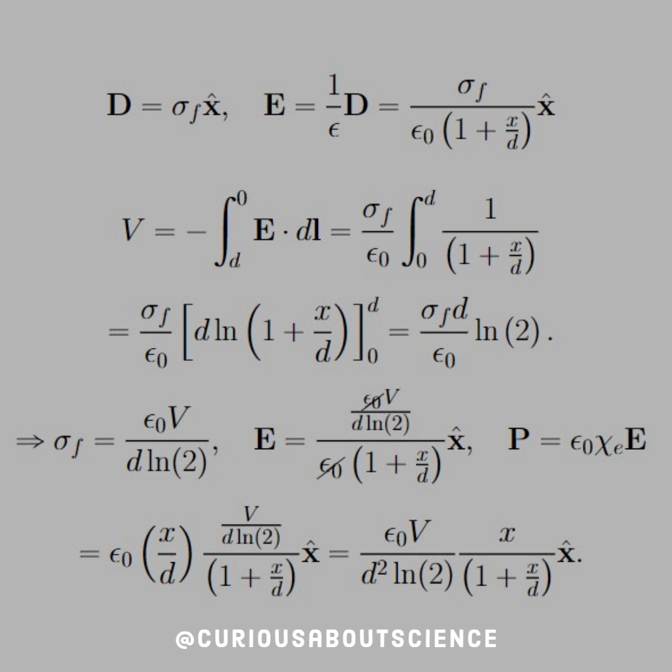So between the plates, we can find the electric displacement D, which we need to find first in order to find the electric field, since in order to find the bound charges, we need the polarization P, which we find P from E, and we use D to get E. So D equals sigma f in the x hat direction. And we know that E is equal to one over epsilon times D. And you see, that's pretty simple.